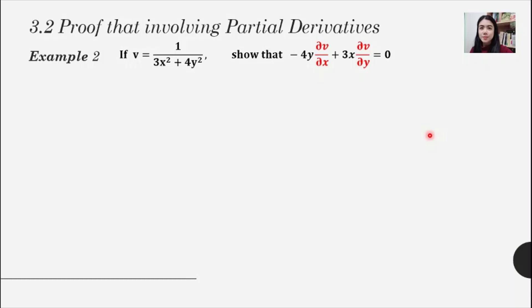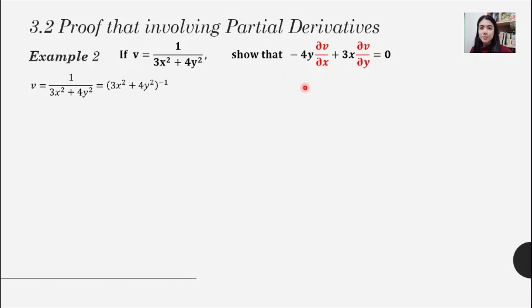In Example 2, we are given a function v and need to show that a given expression equals zero. The same approach applies: first find the first order partial derivatives. For del v/del x, before differentiating, rewrite the function in index form — converting to a bracket raised to the power of minus one — to make differentiation easier.